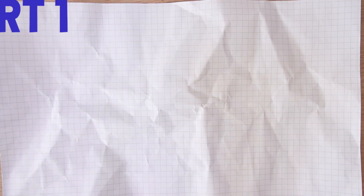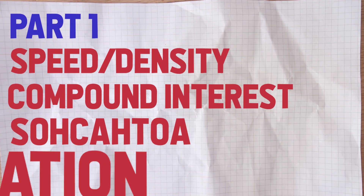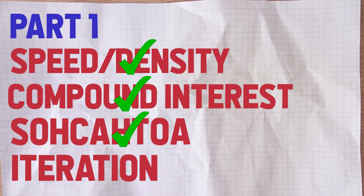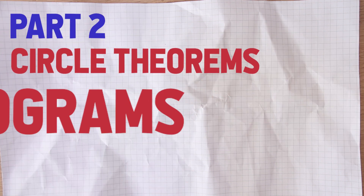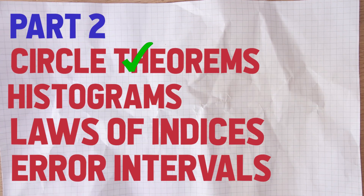I did two videos with things that might come up in the calculator papers — not specifically paper two or paper three, but just the calculator papers — and I put that out ahead of paper two. Not all of those things came up in paper two, but by the time paper three had come up, more or less everything we predicted had appeared. You can see the success rate we had. By the time we'd seen paper two and paper three, more or less all of those topics had come up.